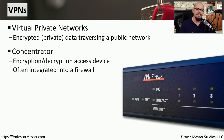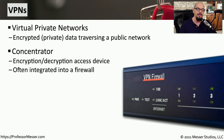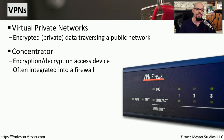The device that's doing all of the hard work on a VPN is the VPN concentrator. This is the device that is encrypting data, sending it out over the network, and then decrypting anything that it happens to receive. This concentrator is often a standalone device, or it's integrated into another device, such as a firewall.